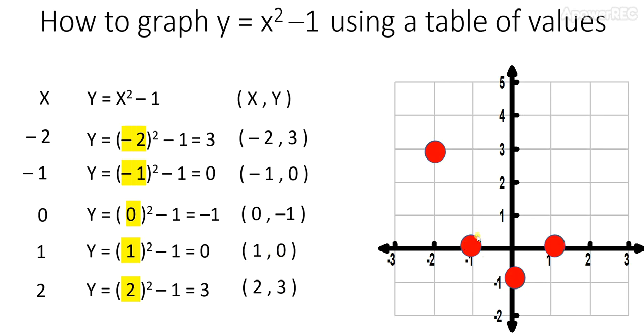And lastly, 2 comma 3, we go two units to the right, and three units up, and we plot our point. That's step 2. The third step, the final step, is as follows.